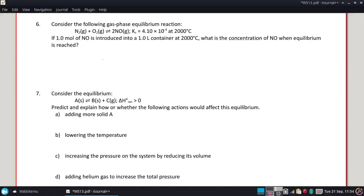Consider the following gas phase equilibrium reaction: nitrogen and oxygen form NO. Got a Kc there at 2,000. If one mole of NO is introduced in a one liter container, also at 2,000, what is the concentration of NO when equilibrium is reached?